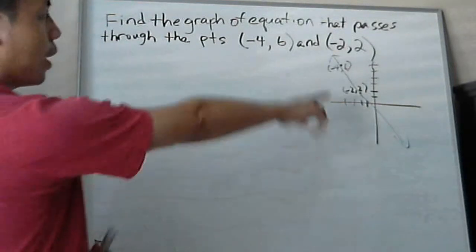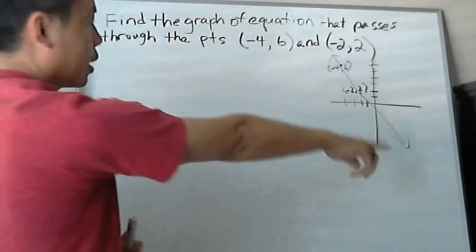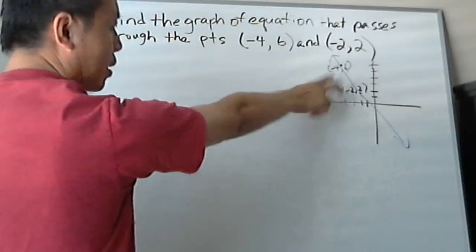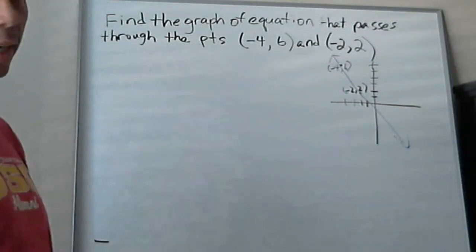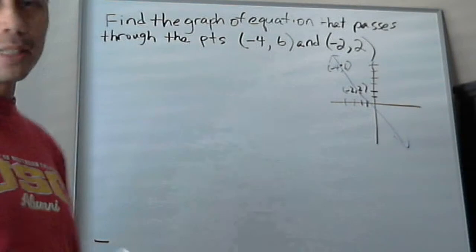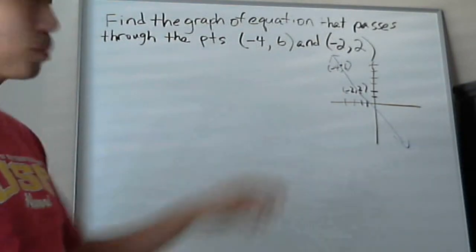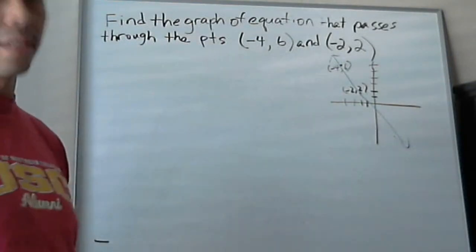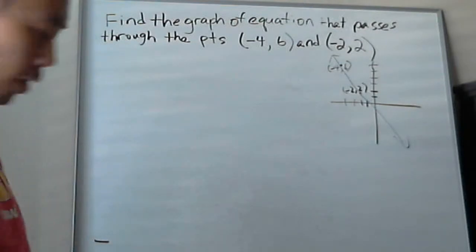So we're going to find out what is the equation of this line that passes through these two points. So you're trying to figure out how do you do that? We discussed before that one of the most important things about every single line is there's a slope. So you need to find the slope first.